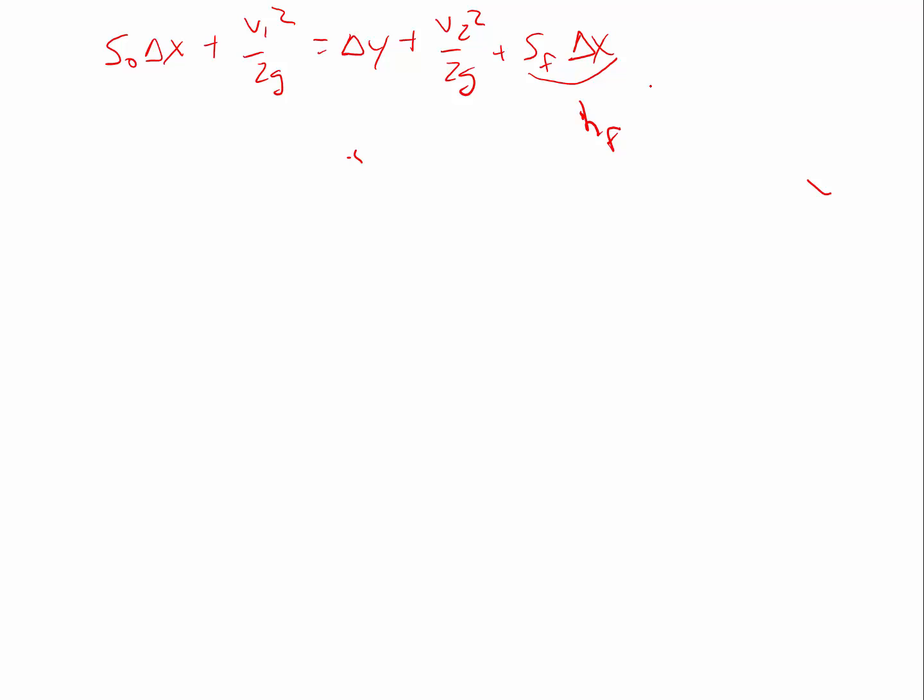So if I simplify this equation here, this becomes delta x equals delta y plus v2 squared over 2g minus v1 squared over 2g divided by s sub o minus s sub f.